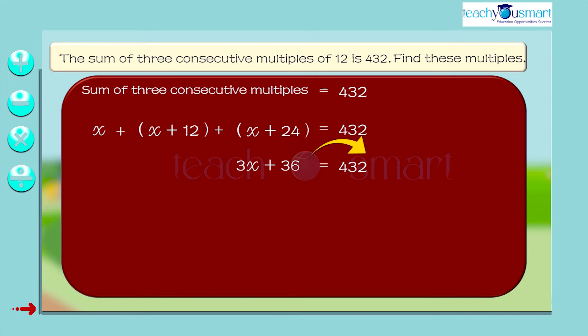Transpose 36 to RHS. 3x equals 432 minus 36 equals 396. Transpose 3 to RHS. Therefore, x equals 396 divided by 3 equals 132.